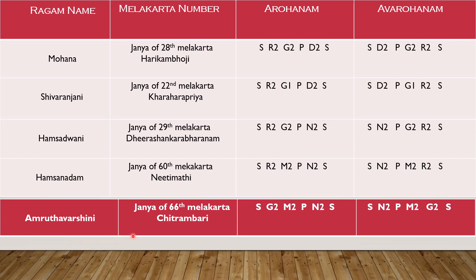Next is Amruta Varshini, Janya of the 66th Melakarta Chitrambari. From Hamsanadham, if you remove Ri 2 (Chathushrutirishabham) and place Ga 2 (Antara Gandharam), the rest of the notes remain the same — that is Amruta Varshini. Sa Ga Ma panisa saani pamagasa — that is Amruta Varshini.